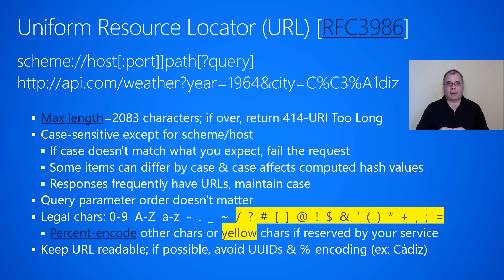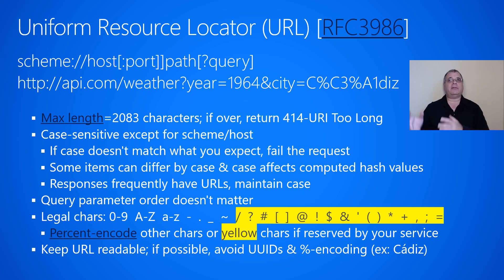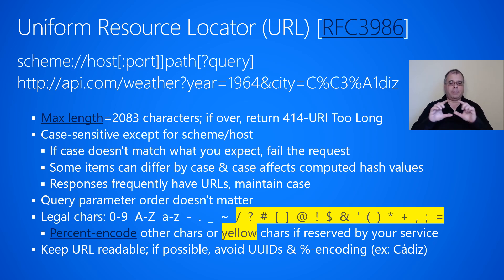The URL is a contract between your service and the client. The URL should have a max length, and we recommend a maximum of 2,083 characters. The reason is that there's a lot of infrastructure on the web, like routers, that have this kind of limit. If you go above it, some internet infrastructure or browsers might truncate the URL. If the URL is over the maximum length your service allows, you would return a 414 URI Too Long HTTP status code. According to the RFC specification, URLs are case-sensitive except for the scheme and the host, which are case-insensitive.